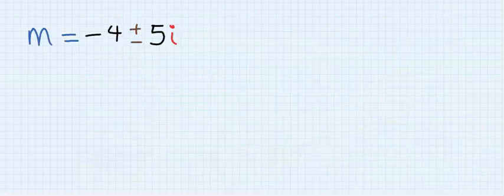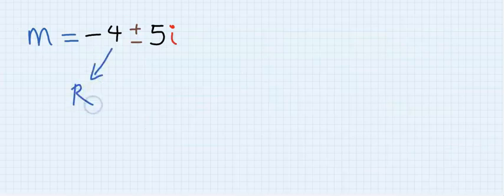Here, we got a complex root, with minus 4 being the real part of the complex number, and 5 being the imaginary part of the complex number.